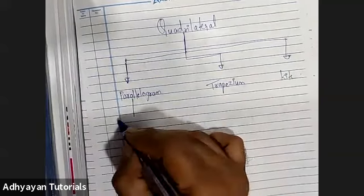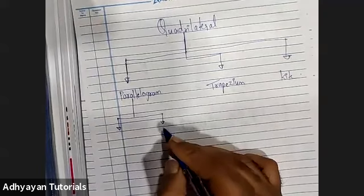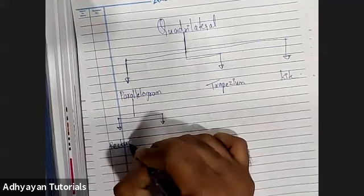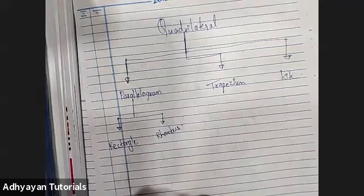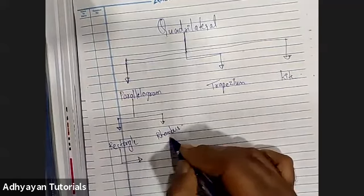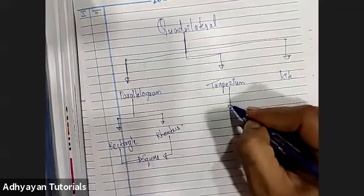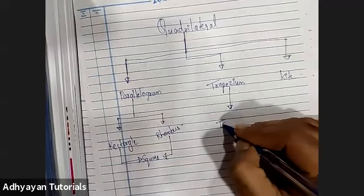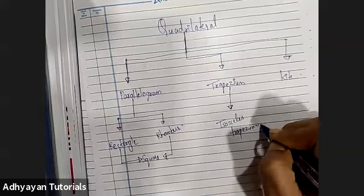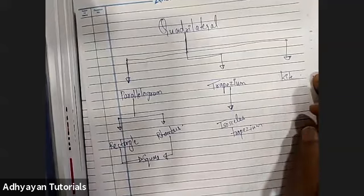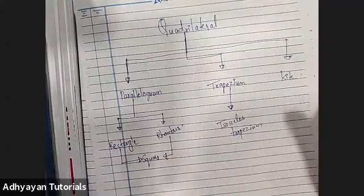The parallelogram can further be classified into two types: one is a rectangle, and the other is a rhombus. Now, further, if you unite and combine these two, it becomes a square. Trapezium can further be classified as an isosceles trapezium. Kite has no further categorization. So this is the family of a quadrilateral — we need to talk about each one of them in detail.